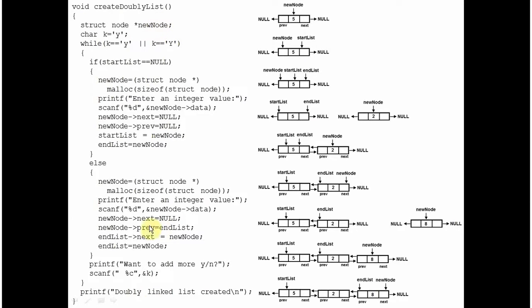Here is the create_double_list function. It will ask the user to enter certain integers and arrange them in the format of a double linked list. After inserting every integer, the user will be asked whether they want to add more. I am taking one variable K of character type initialized to lowercase y. This is a while loop which will execute while variable K has either lowercase y or uppercase y. Is start_list null? Is it the first node?